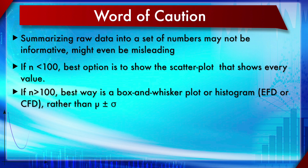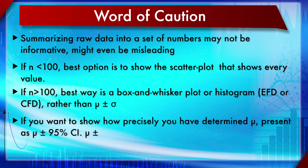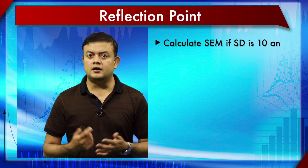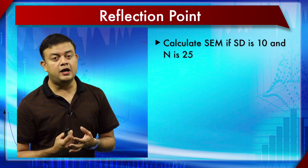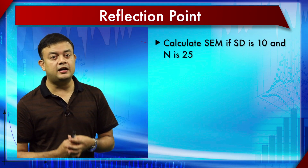If n is more than 100 and the data becomes exhaustive in a scatter plot, the best option would be a box and whisker plot with outliers clearly marked. If you want to show how precisely you have determined the sample mean, the best estimate would be sample mean plus or minus 95% confidence interval, instead of using SEM.